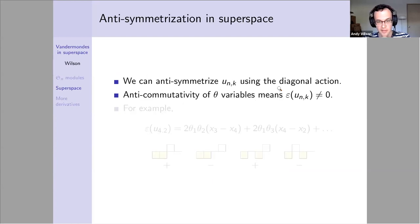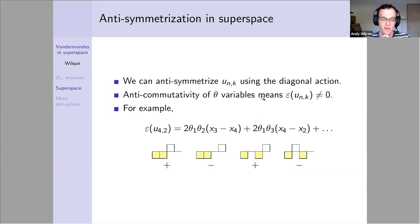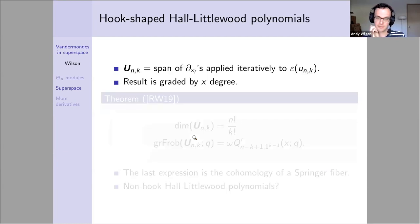We can still anti-symmetrize. The fact that the theta variables are anti-commutative means we don't get zero, we get something. Here's a toy example. If we start with n equals 4, k equals 2 case, these are some of the super monomials we get in that expression. In fact, everything comes with a factor of two because switching the two theta variables doesn't do anything.